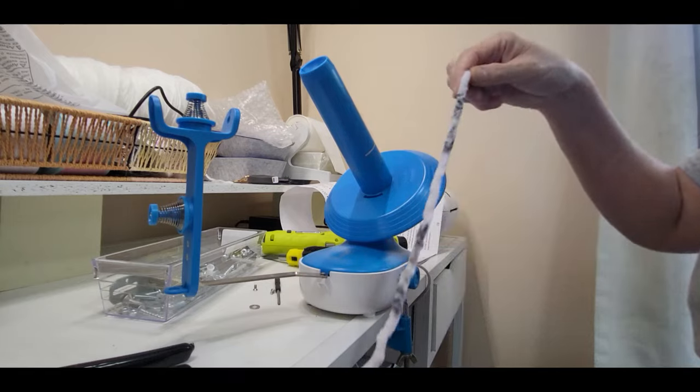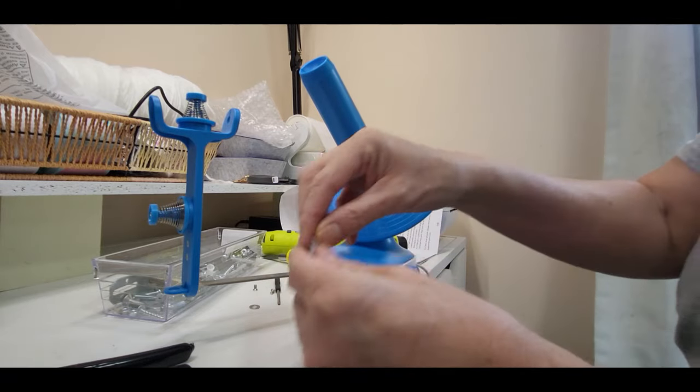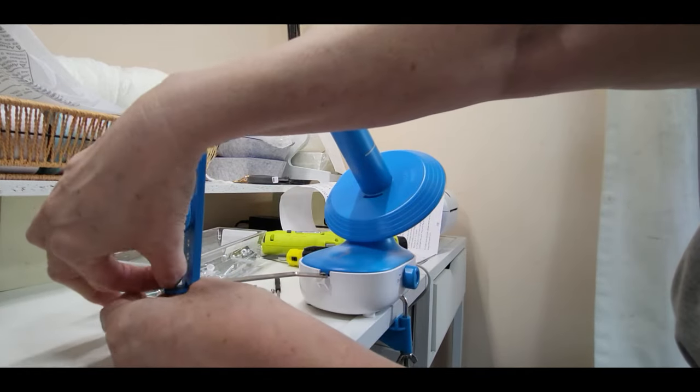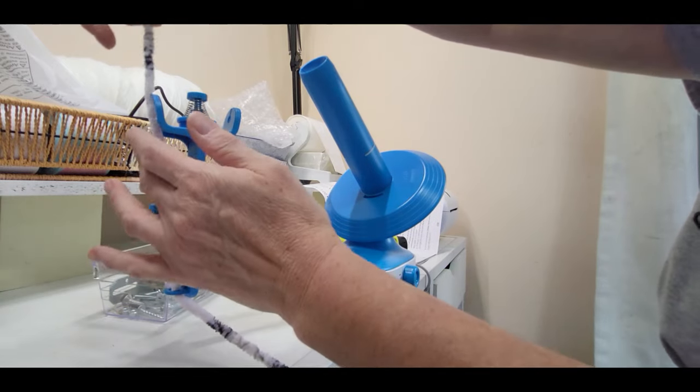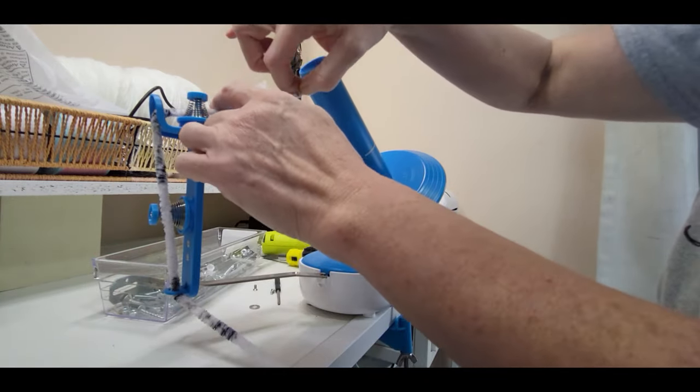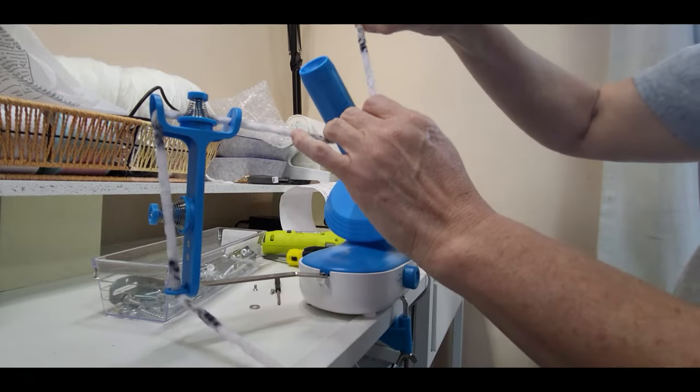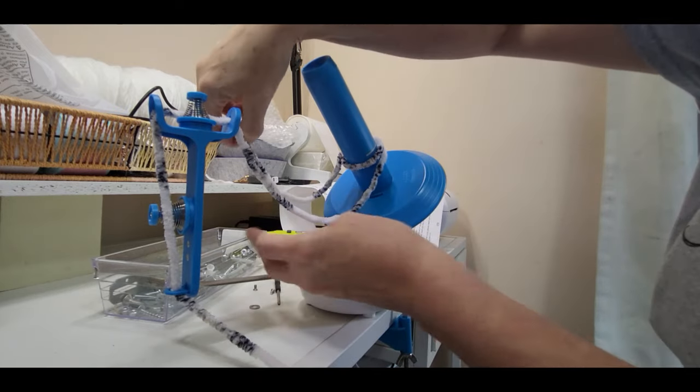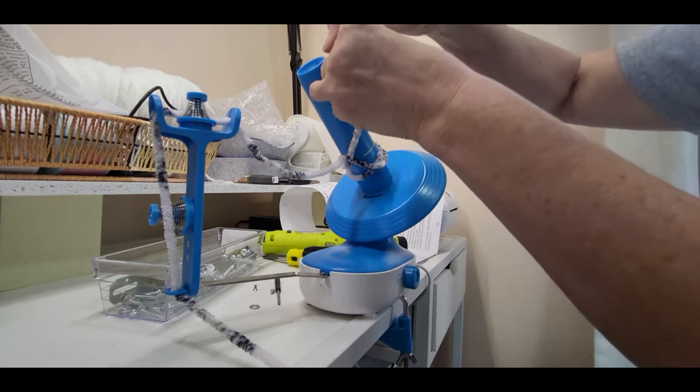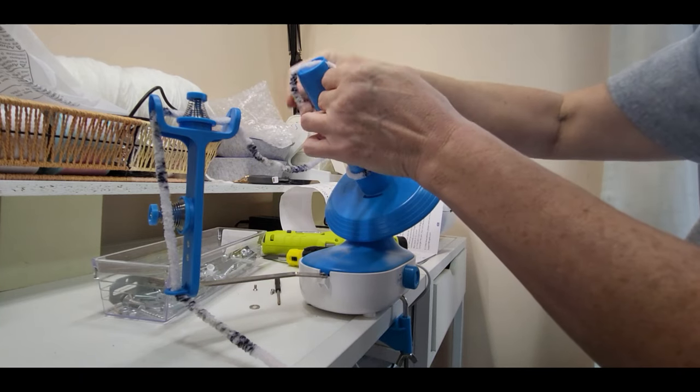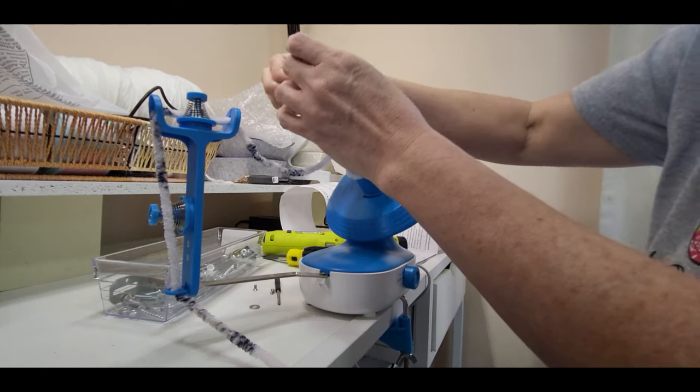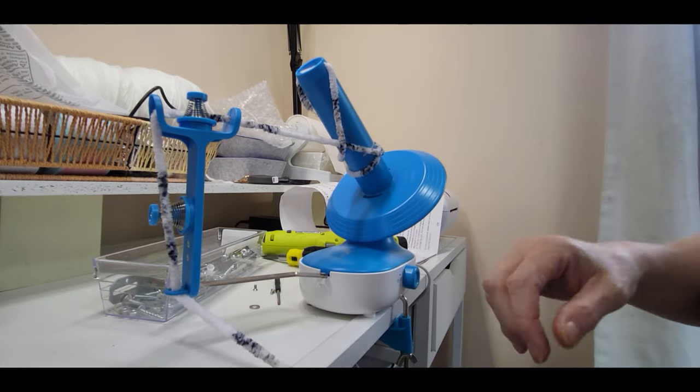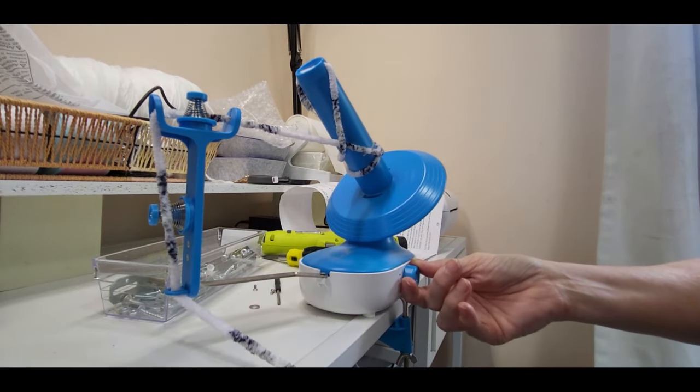Now here we are. We put it up underneath, bring it to the front, bring it around to the back and through the guide. Put it around twice and then put it underneath and up and over. Let's hope and pray. Start off slow.